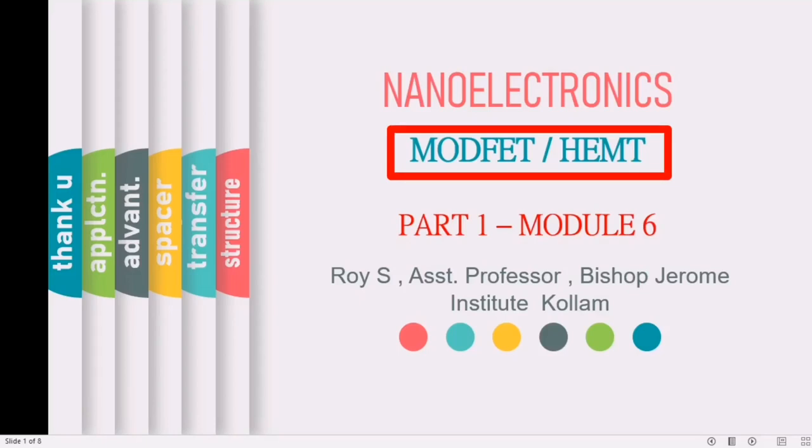Modulation doped field effect transistor or MODFET is a field effect transistor having a conducting channel at the junction of two dissimilar bandgap materials. A two dimensional electron gas or 2DEG layer acts as a channel with very high mobility for the electrons. So the device is also commonly known as High Electron Mobility Transistor or HEMT.